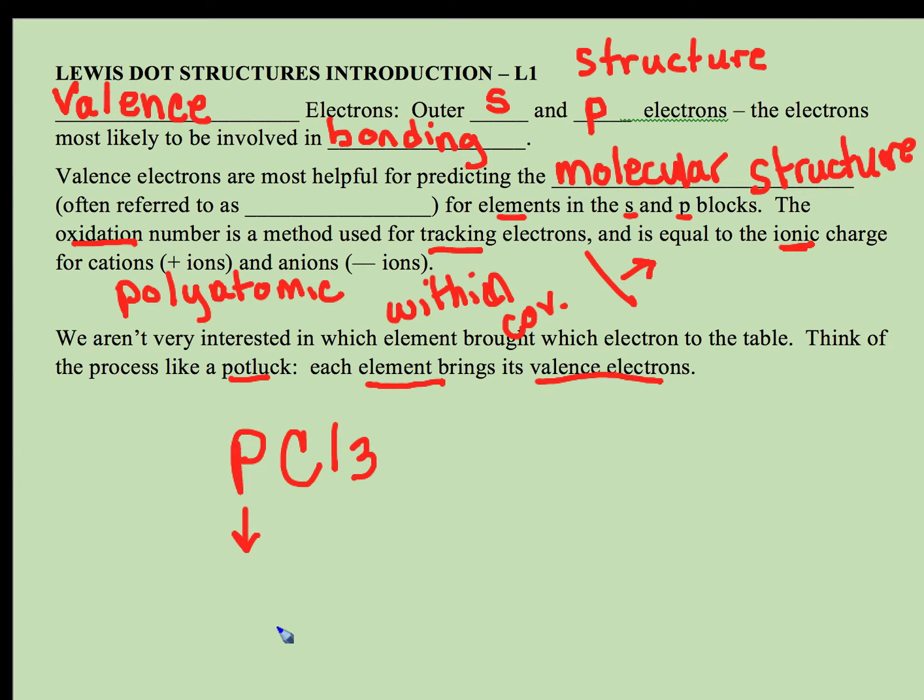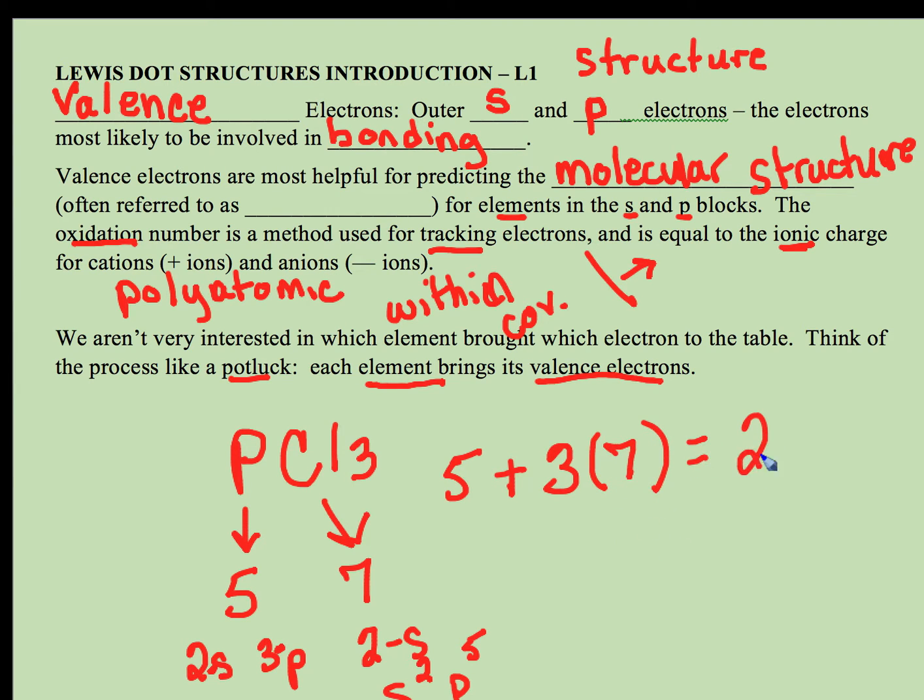I'm going to do an example of PCl3. Phosphorus is in group 15, it has five valence electrons - two of them are s and three of them are p. Chlorine has seven valence electrons - two s electrons and five p electrons. So we have five electrons from phosphorus and three chlorines each bringing seven electrons to the table. We're going to look at a method for distributing those 26 electrons fairly within the bonding structure.